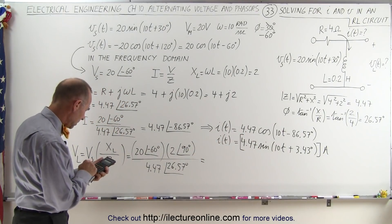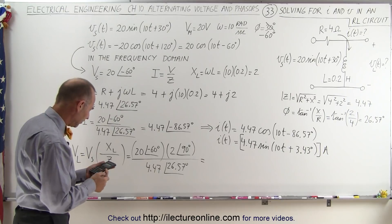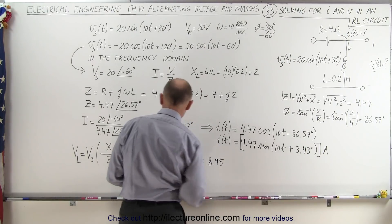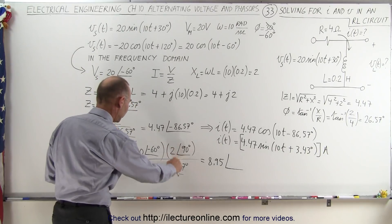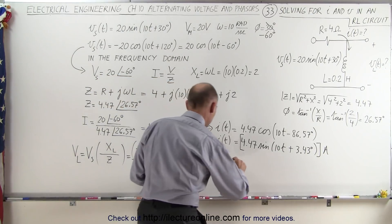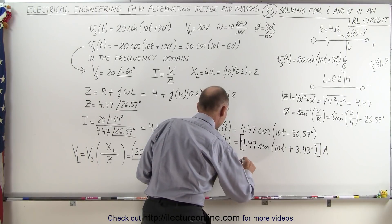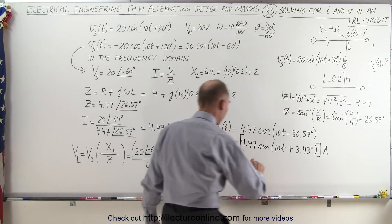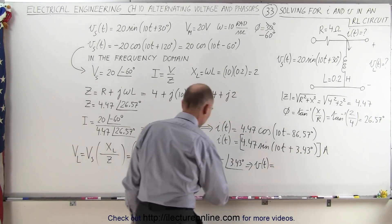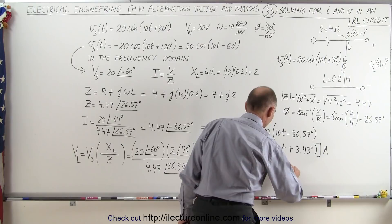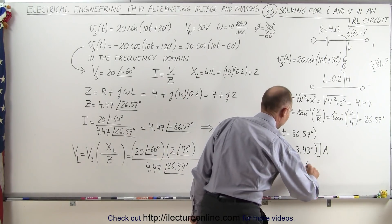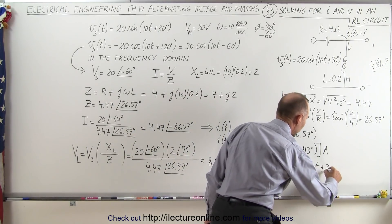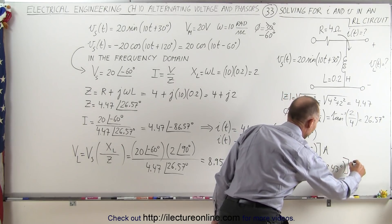So we have 20 times 2 divided by 4.47, which gives us 8.95. The phase angle is minus 60 plus 90 minus 26.57, giving us 3.43 degrees. Converting to the time domain — noting this is in terms of the cosine — the voltage as a function of time equals 8.95 volts times the cosine of 10t plus 3.43 degrees.